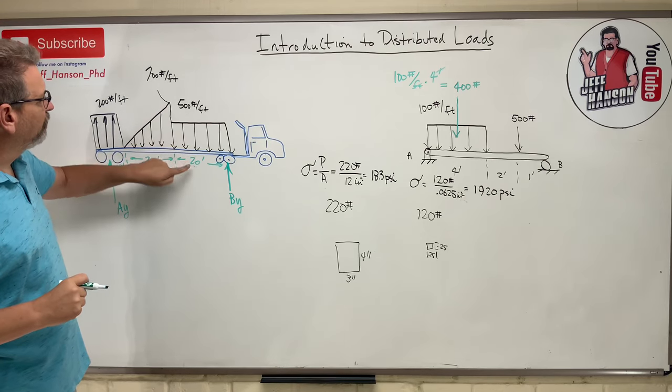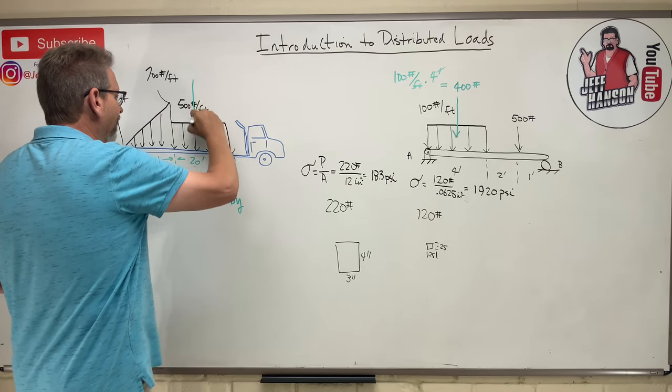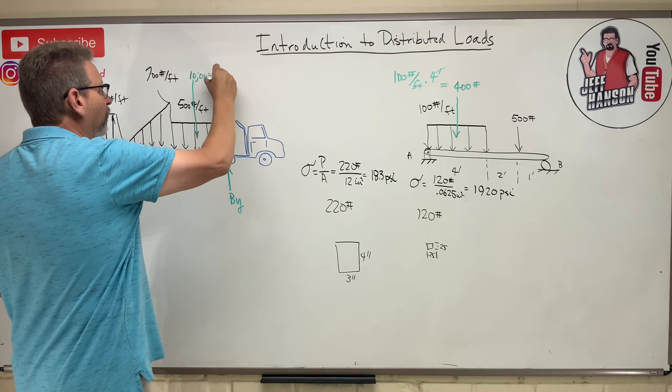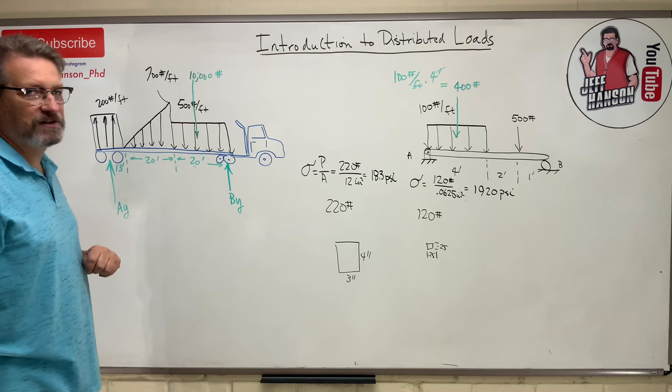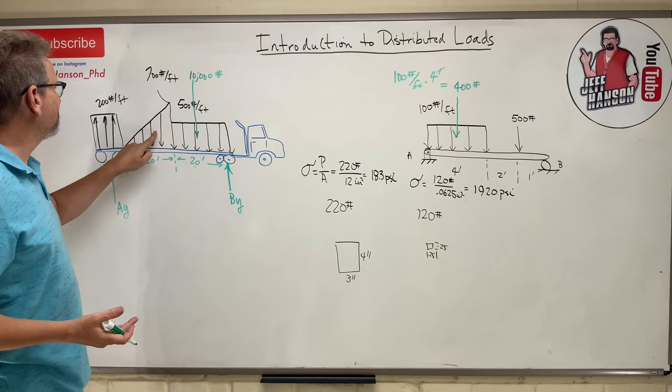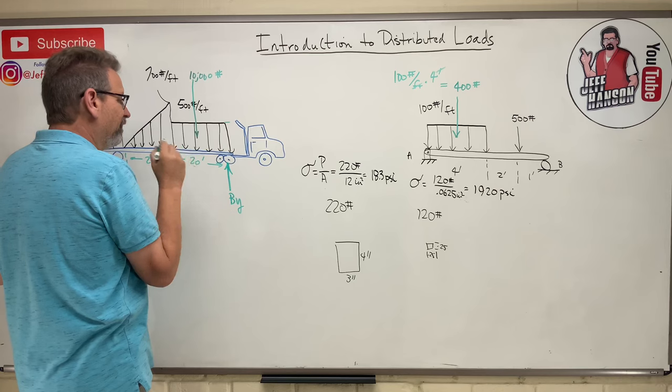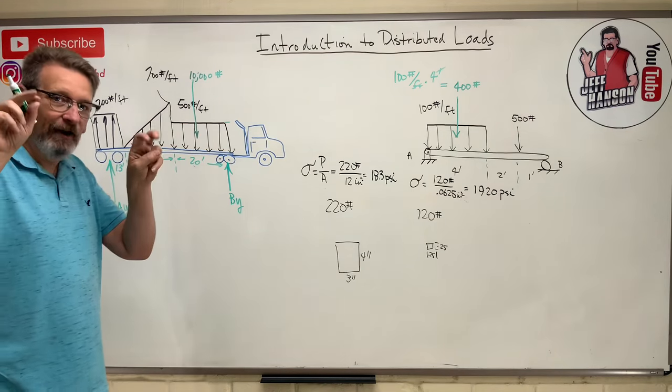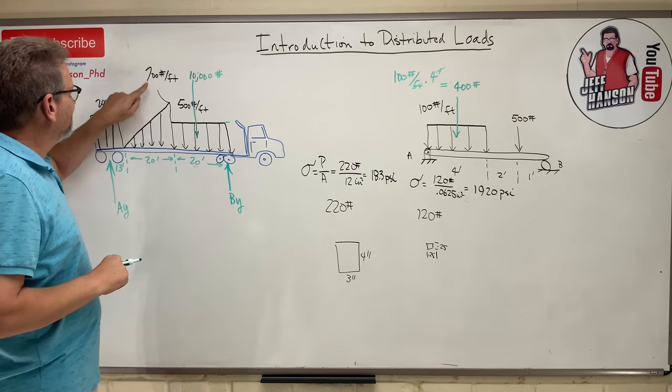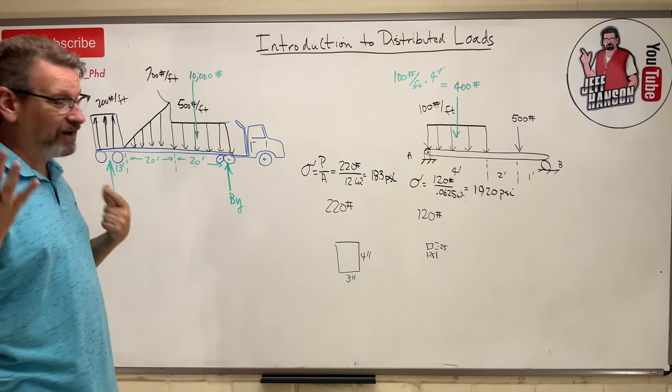So this bit up here is 500 times 20. That's going to be 10,000. And where would I apply that? Right there. So that's 10,000 pounds. And I would apply that right in the center of that rectangle. Because the centroid of a rectangle is half the base, right? Then this guy, and all I'm doing, think about this as an area. Think about the 500 as the height and the 20 as the width. And I'm finding the area and you can't go out with a tape measure and measure that area, but it's an area.